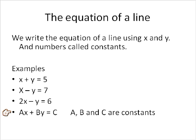The standard way of writing the equation of a line is called the standard form, and we write it like this: Ax, in other words some number times x, plus By is equal to C. And A, B, and C are just constants.